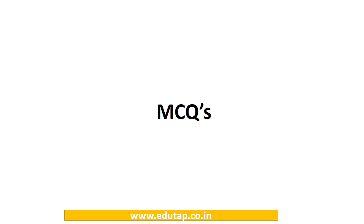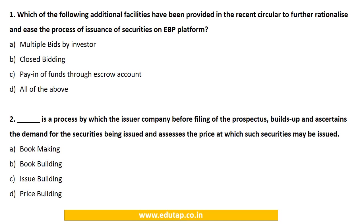MCQ 1: Which of the following additional facilities have been provided in the recent circular to further rationalize and ease the process of issuance of securities on the EBP platform? Options: (A) Multiple bids by investors, (B) Closed bidding, (C) Payment of funds through escrow account, (D) All of the above. The answer is D — all of these facilities have been provided.